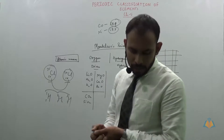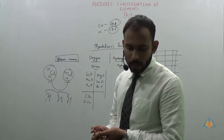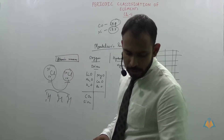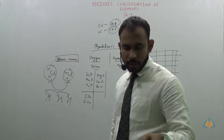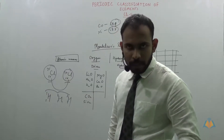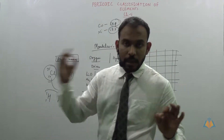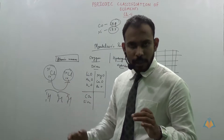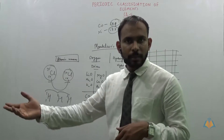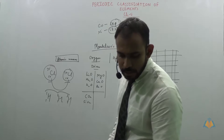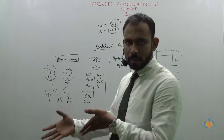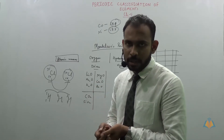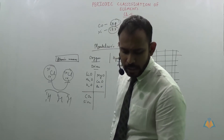A third limitation is that a correct position could not be assigned to hydrogen. Hydrogen is placed in group one with lithium, sodium, and potassium because it has one electron in its outermost orbit. However, hydrogen could also be placed in group seven with the halogens (fluorine, chlorine, bromine, iodine), since it also needs just one electron to complete its duplet. Mendeleev could not answer this question, and so it was not accepted.